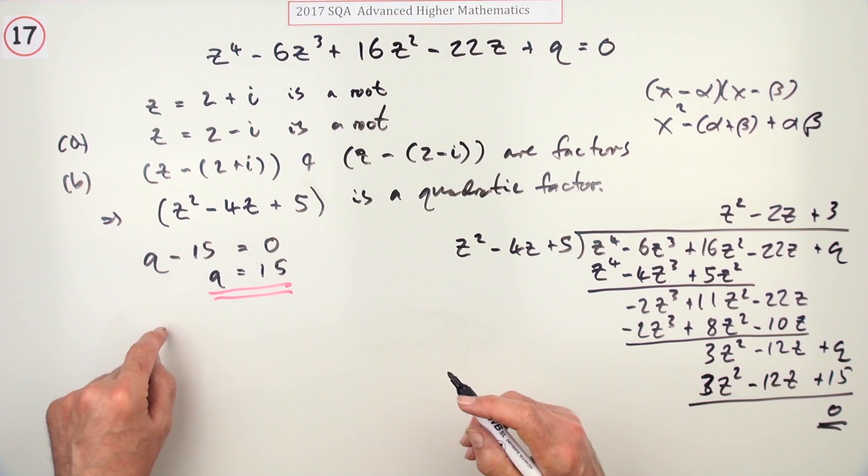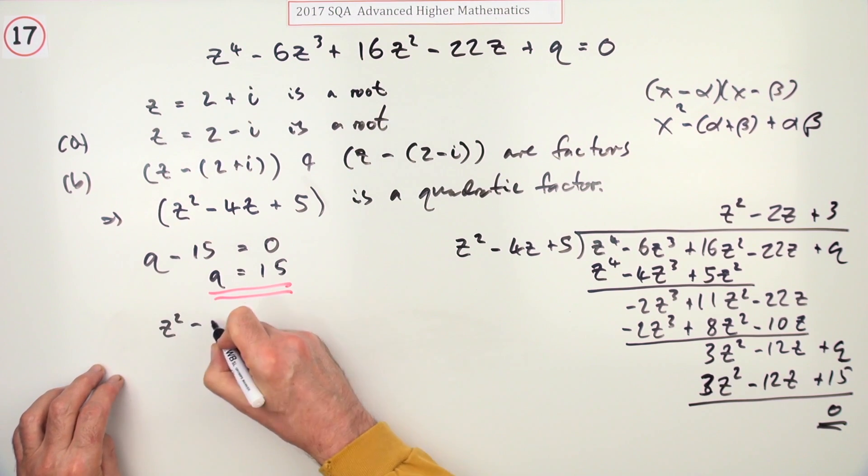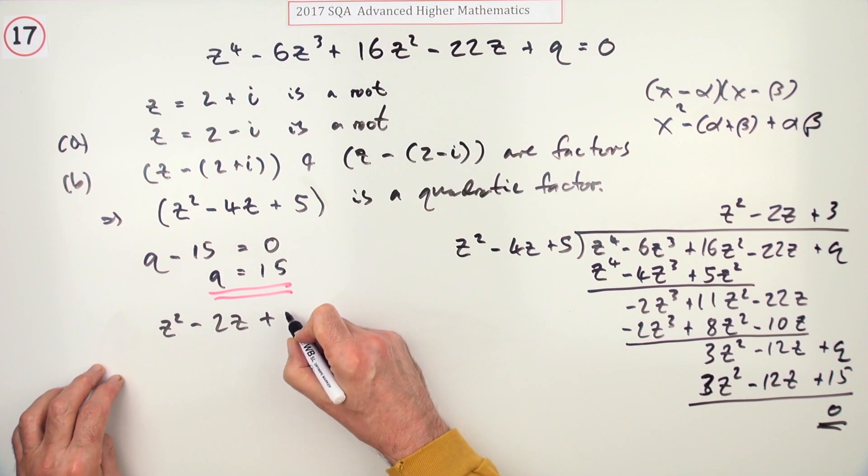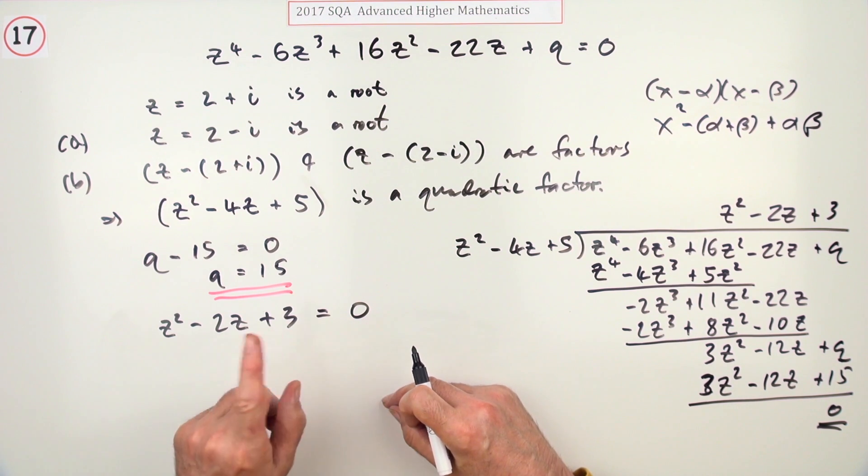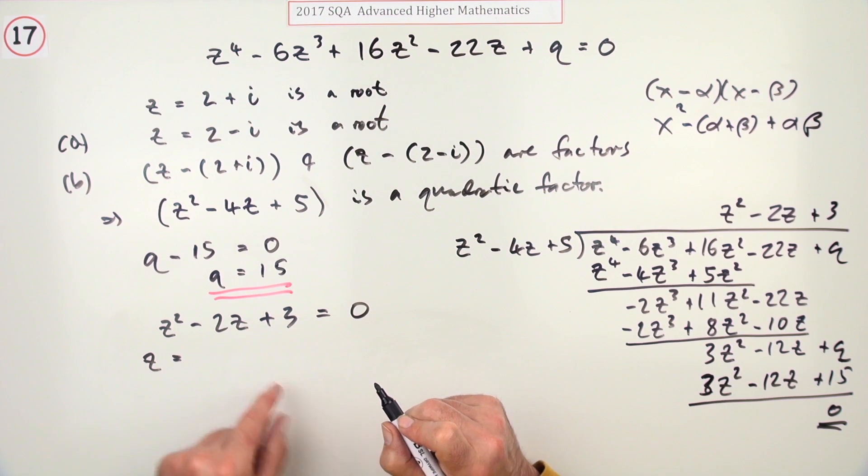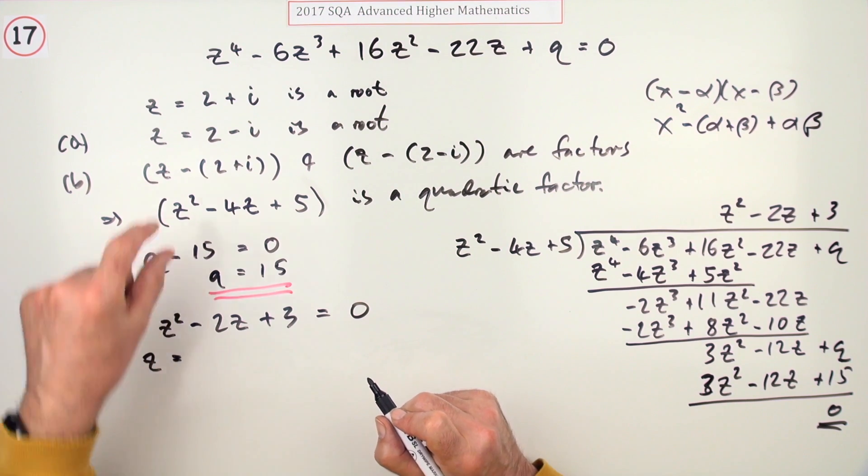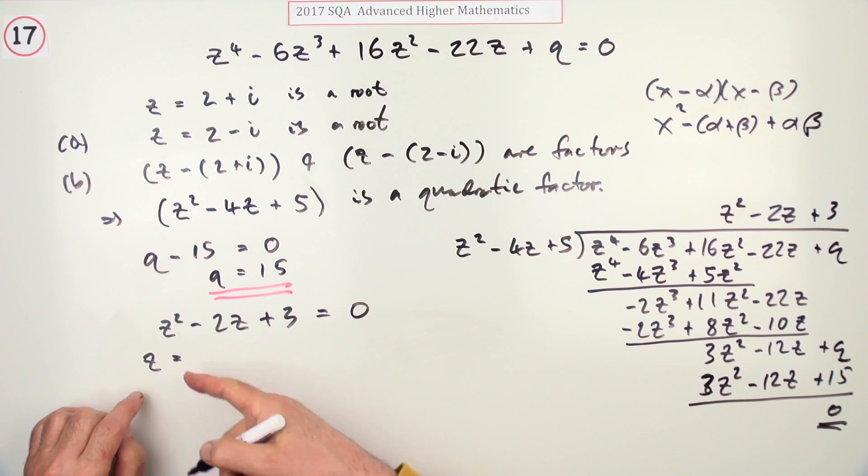For the remaining pair of factors, take z² - 2z + 3 = 0 and solve. This wouldn't work with just integers because you've got 4 - 12 for the discriminant, so use the quadratic formula to find another pair of conjugate complex roots.